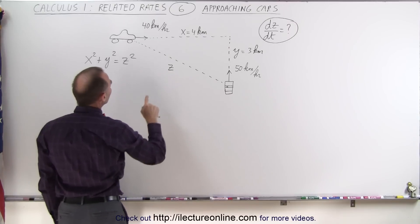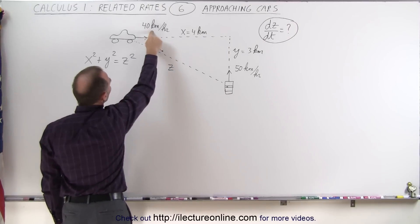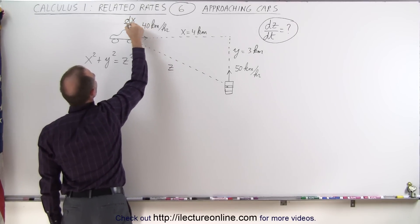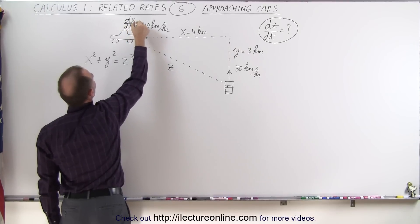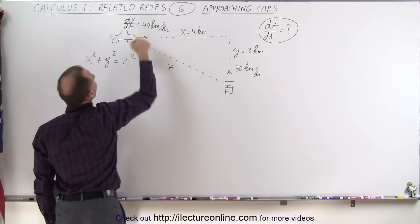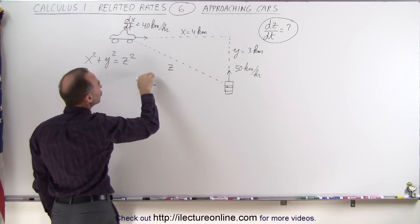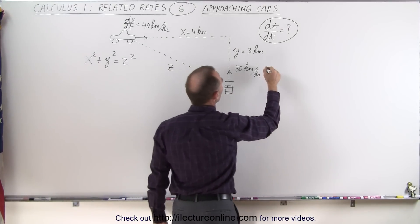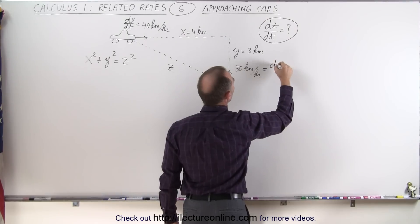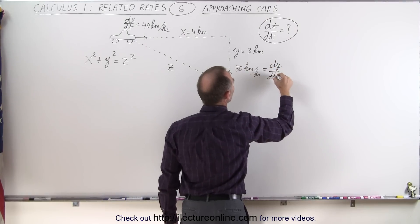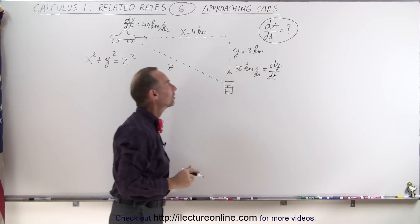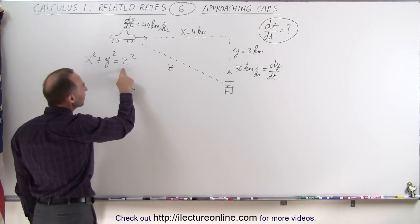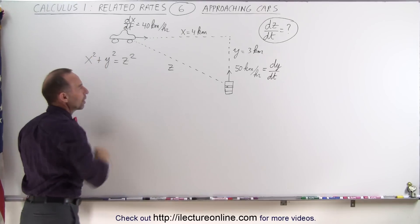We have to realize that this is really dx/dt. We can say dx/dt is equal to 40 kilometers per hour — it's the rate of change in the x direction. And this can be expressed as dy/dt, the rate of change in the y direction with respect to time. Then all we have to do is find dz/dt using this equation.